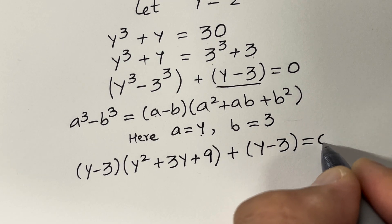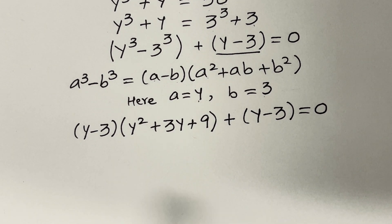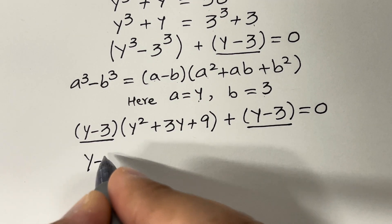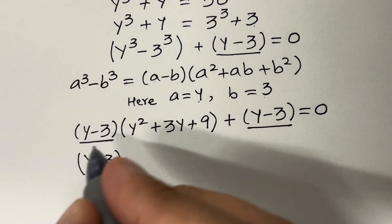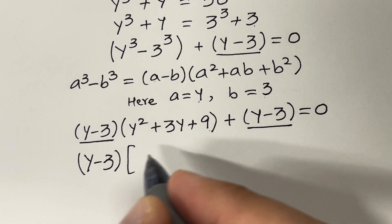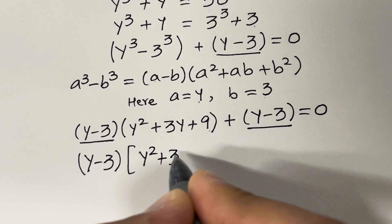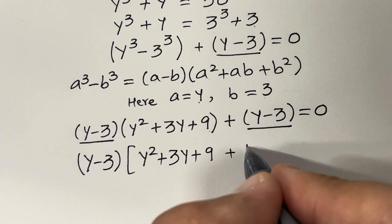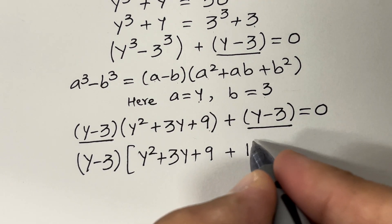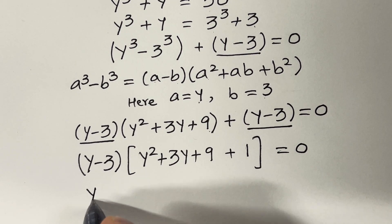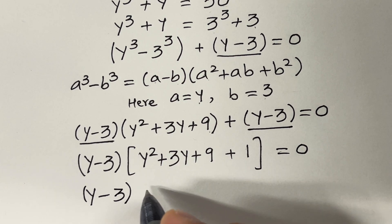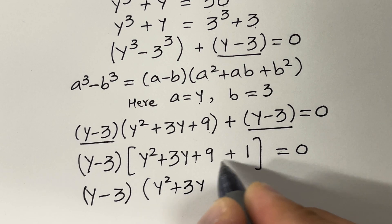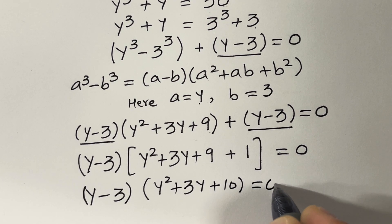We also have the remaining term y minus 3 equals 0. Looking at the full expression, we have (y minus 3) appearing in both terms, so let's factor it out. This gives (y minus 3)(y squared plus 3y + 9 + 1) equals 0, which simplifies to (y minus 3)(y squared plus 3y plus 10) equals 0.